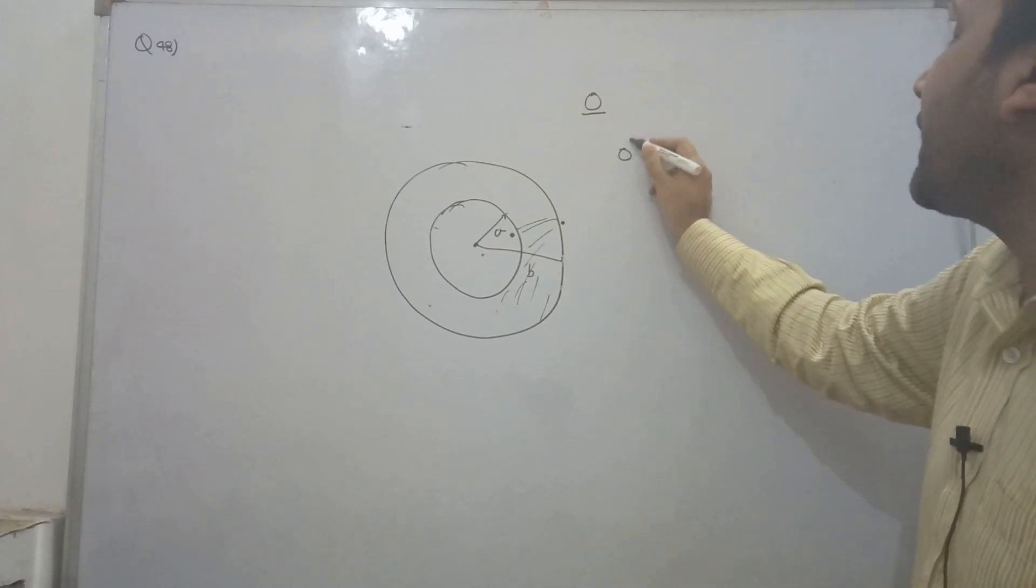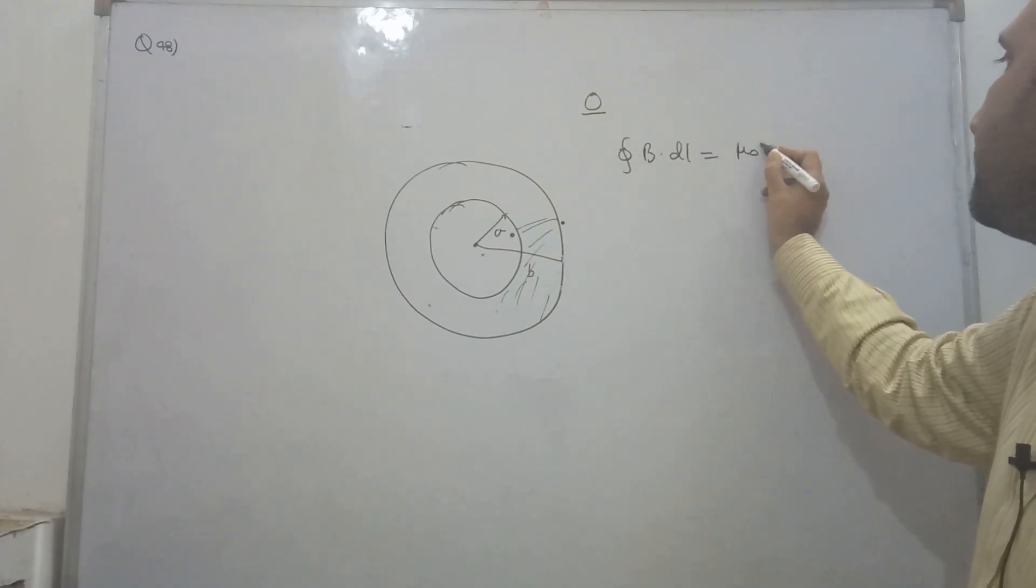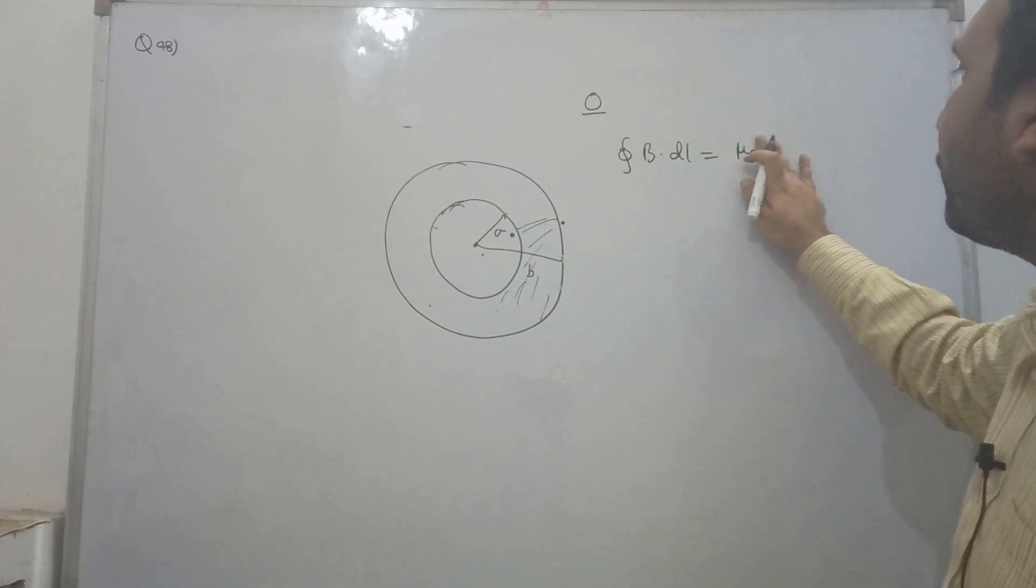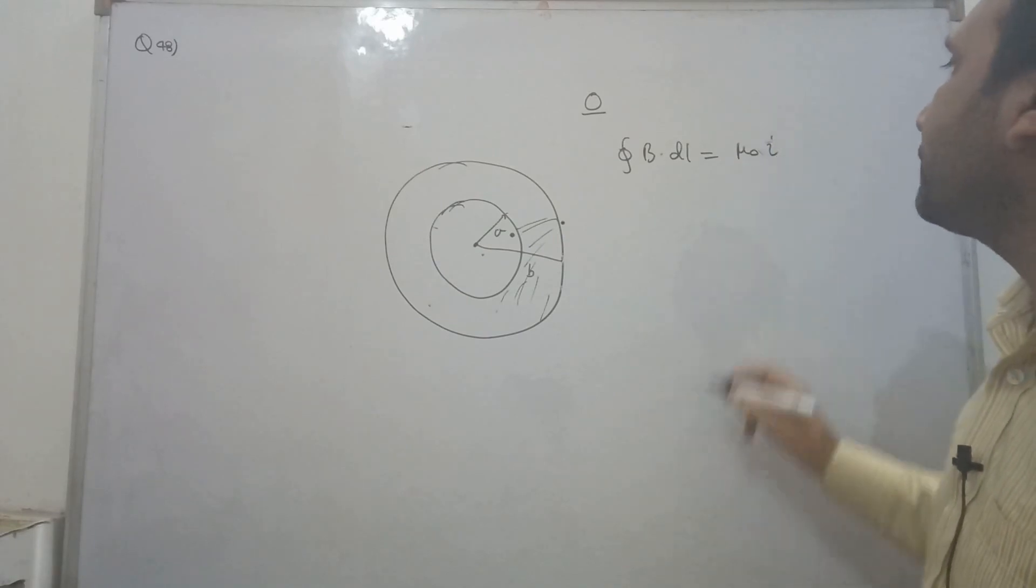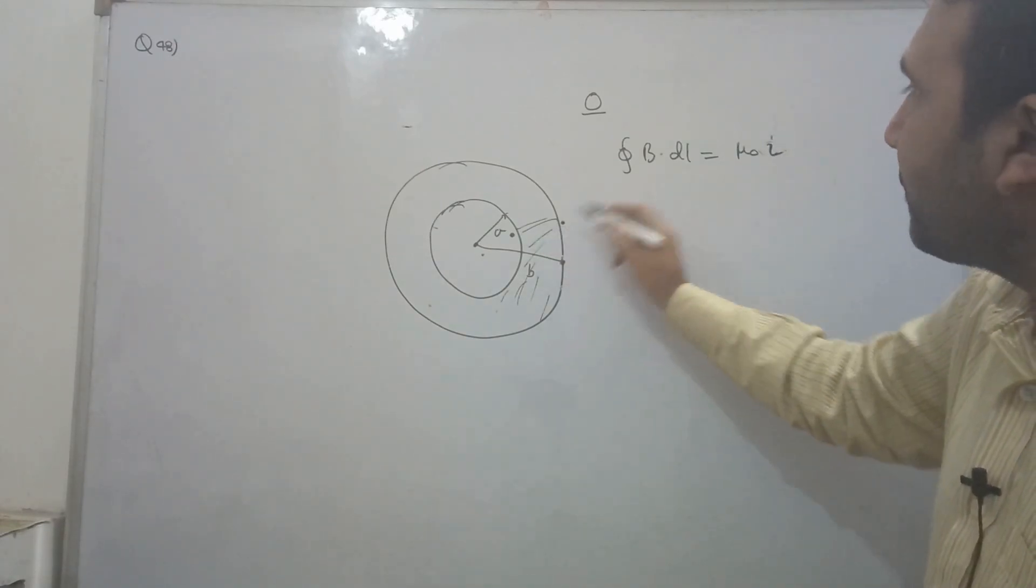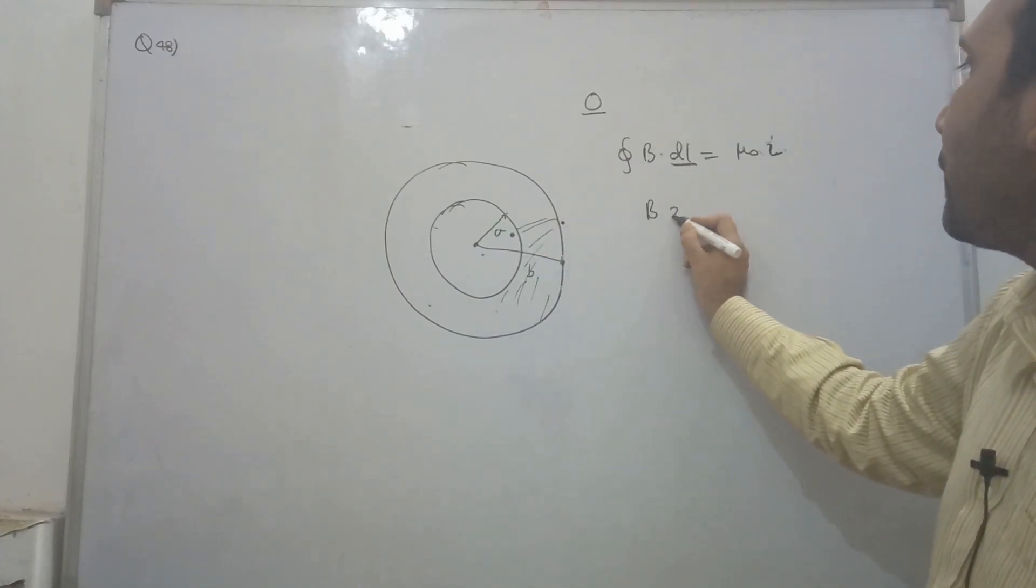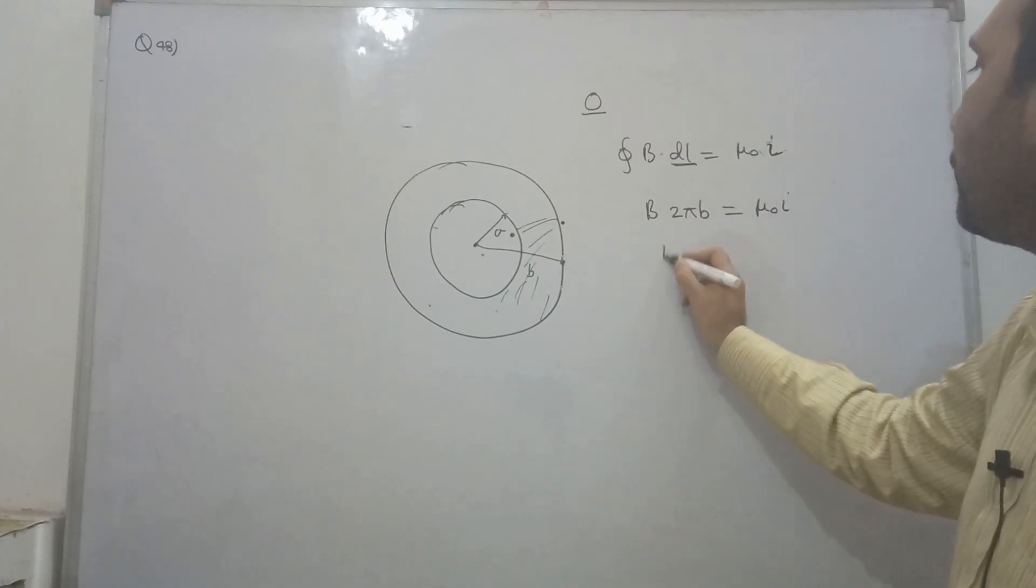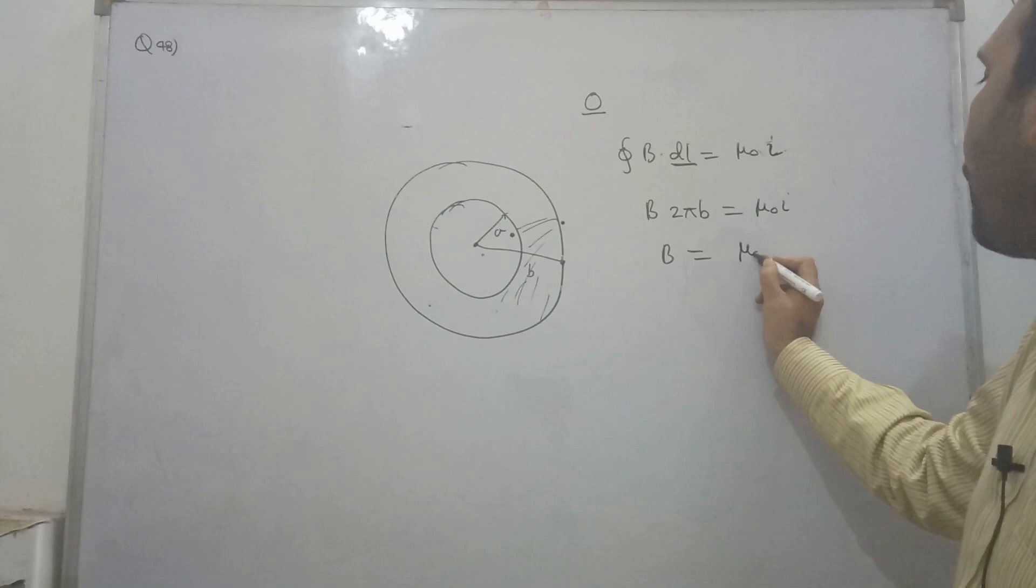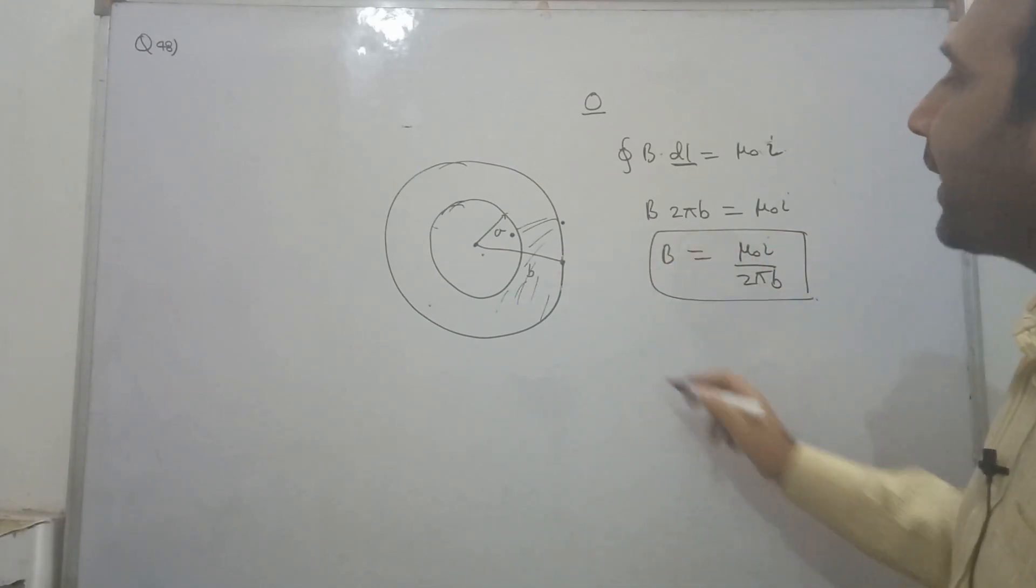Second part: The integral b dot dl equals mu naught i. The enclosed current is the entire current i, and the length is 2 pi b. So 2 pi b equals mu naught i. Therefore b equals mu naught i upon 2 pi b. This is our magnetic field outside the cylindrical loop.